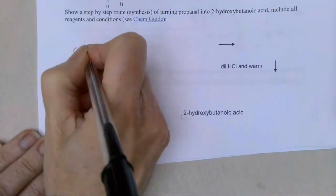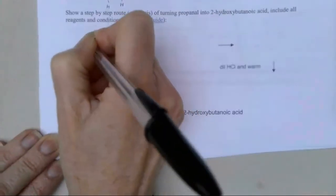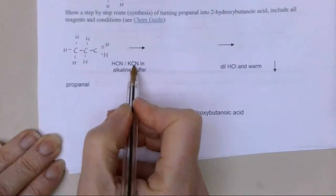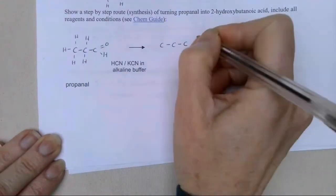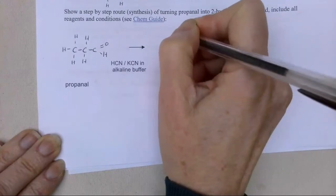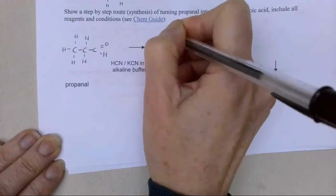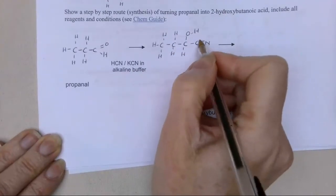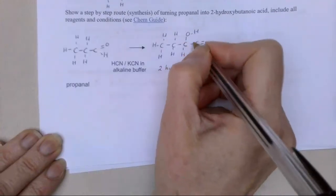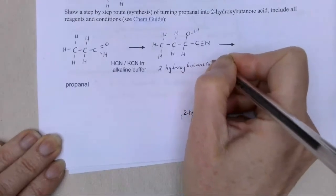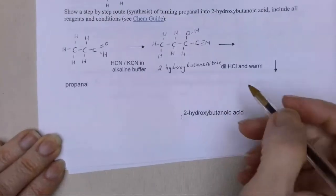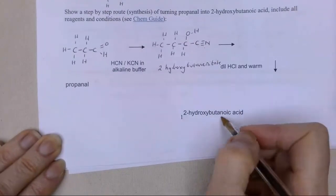We're going to start with propanol - it's an aldehyde, it's -AL, so I start with my aldehyde here. In the first step, I'm simply going to react it with HCN and KCN, and I'm going to make the hydroxynitrile. Notice I've now got four carbons in my chain, and that second carbon has an OH group on it. We're numbering from this end, because this is the highest priority group, so this is carbon number two. So it's 2-hydroxy, and I've got four carbons - butanenitrile. Then I just want my dilute hydrochloric acid and I want to warm it, and that's simply going to change it from this into my 2-hydroxybutanoic acid.